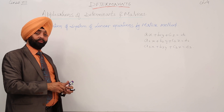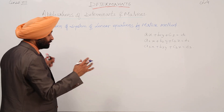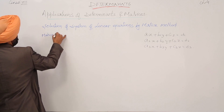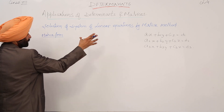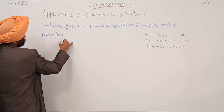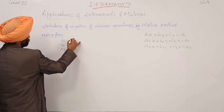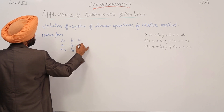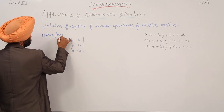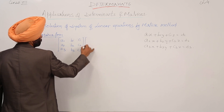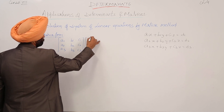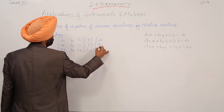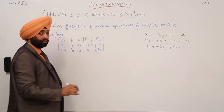Now how do we write this in matrix form? We can write these equations with the coefficient matrix containing a1, a2, a3, b1, b2, b3, c1, c2, c3 — a 3×3 matrix — equal to the constants d1, d2, d3.